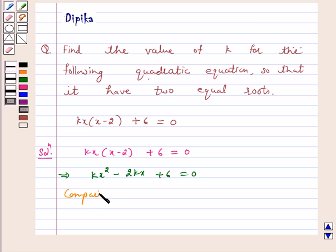Compare the above quadratic equation with ax square plus bx plus c is equal to 0.